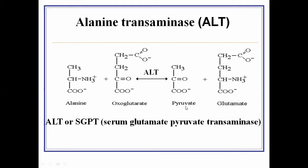As you can see, pyruvate acquires the amino group from glutamate. The amino group is attached to glutamate. Pyruvate is a keto acid, containing a carboxyl group and a keto group. When pyruvate receives the amino group that glutamate transfers, pyruvate becomes alanine. At the keto group position it receives the amino group and becomes alanine, while the glutamate loses its amino group and becomes oxoglutarate, also known as alpha-ketoglutarate. Where there was an amino group, now a keto group is attached. This reversible reaction is performed by the enzyme alanine aminotransferase.